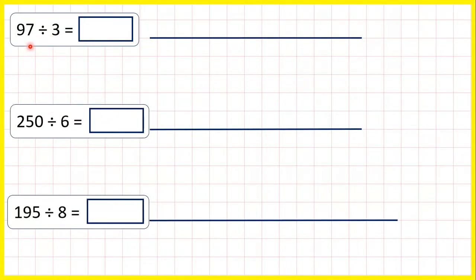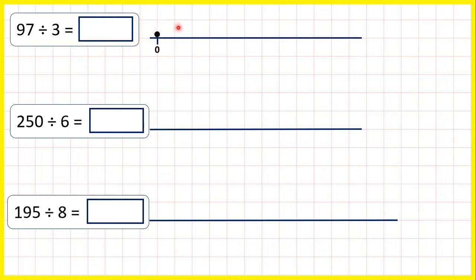We're going to answer these questions by chunking on a number line, but for these questions, we're going to get a remainder in our answer. So for 97 divided by 3, because 97 is much bigger than 3, rather than counting up in steps of 3, we can count on our number line in steps of 10 times 3, so in steps of 30.